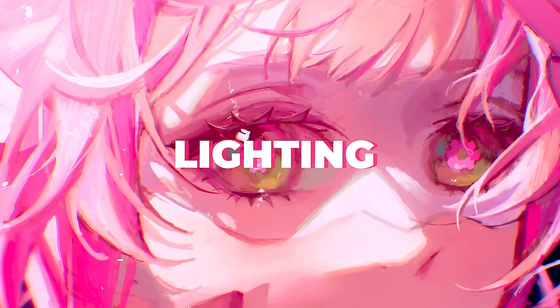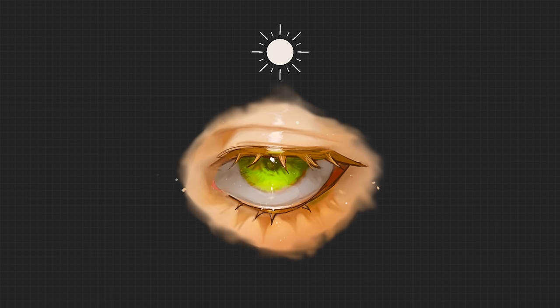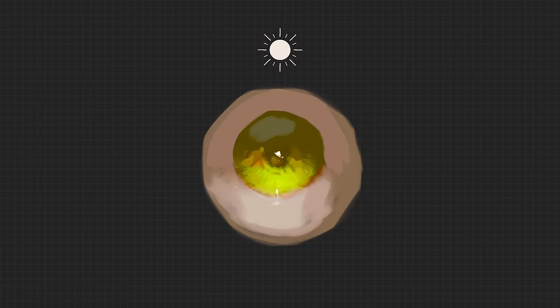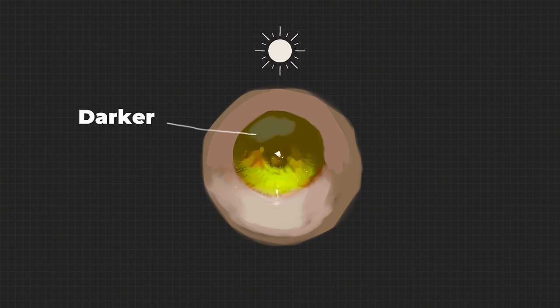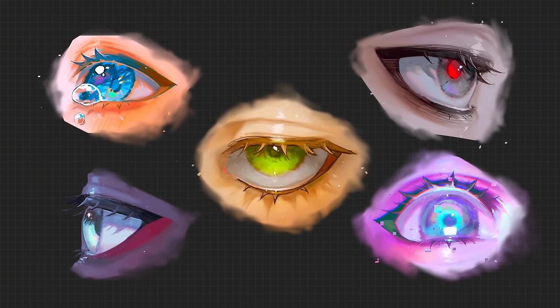Now let's talk about lighting for the eye. Based on where the light source is — let's say from the top — the upper eyelid and eyelashes will cast a shadow down onto the eye. The cone-shaped pupil will be affected by the lighting as well. The top of the iris will be darker as the upper cone shape blocks the light and shines it down to the lower iris instead, causing it to look brighter, while there's a sharp highlight on top of the eye as the moisture of the eye reflects the light source. This applies to any direction of lighting.